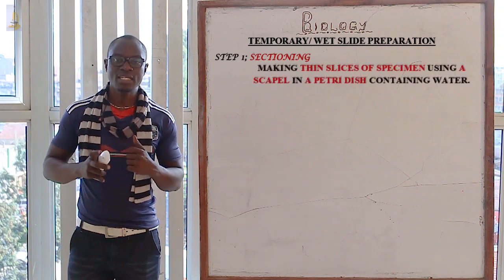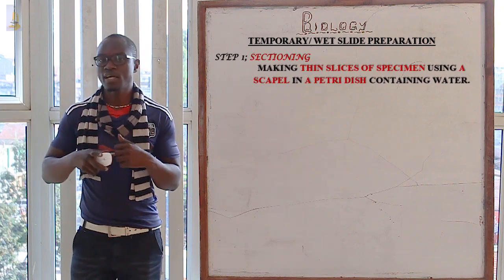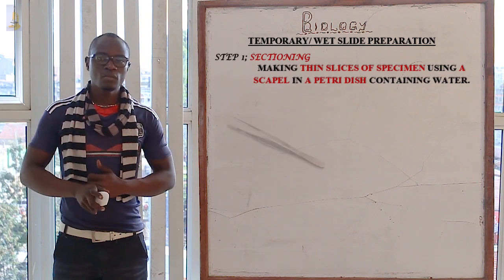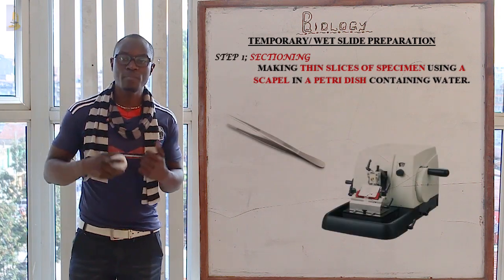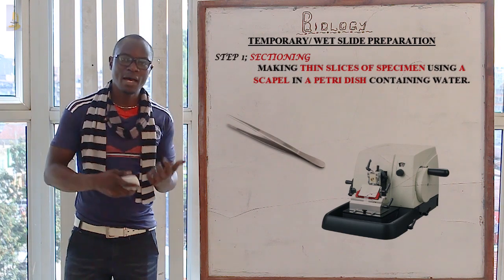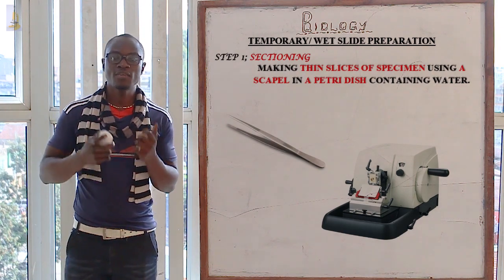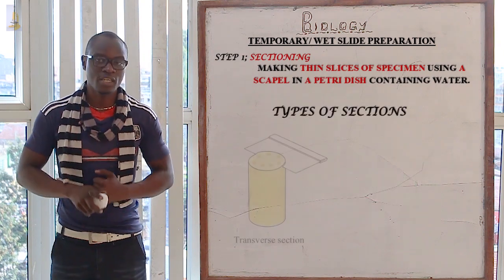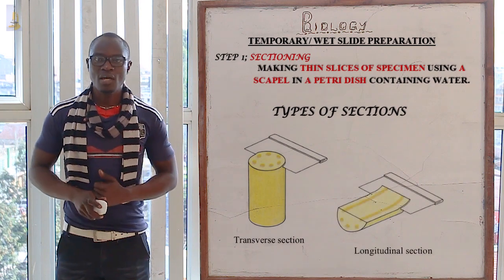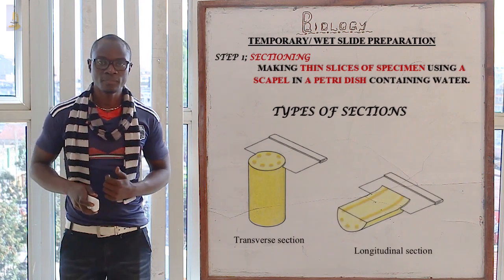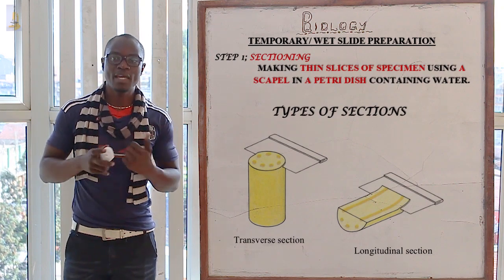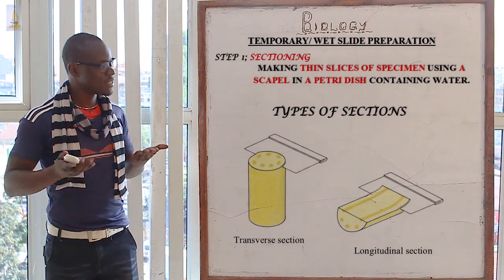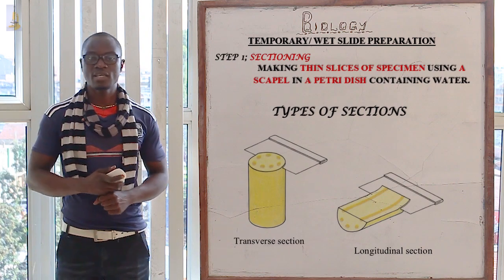What is sectioning? This is cutting very thin slices of the specimen using a scalpel or a petri dish which contains water. A forcep or a microtome apparatus may be used to remove the epidermis of the leaf or to cut very thin slices of the specimen. We have different types of sections: the transverse section and also the longitudinal section. The transverse section is obtained by cutting across the length of the specimen.